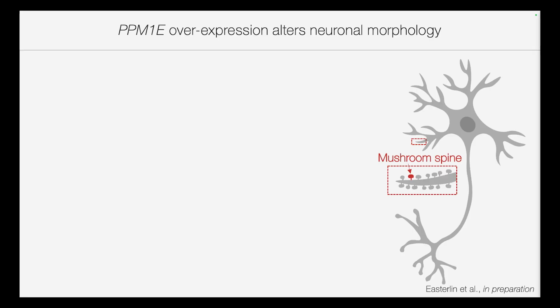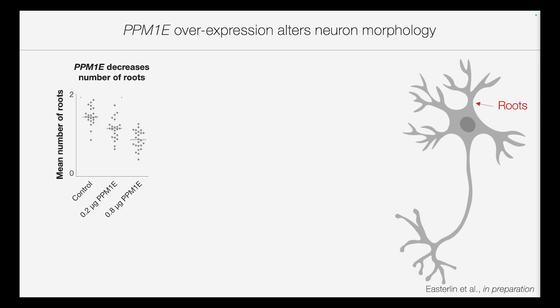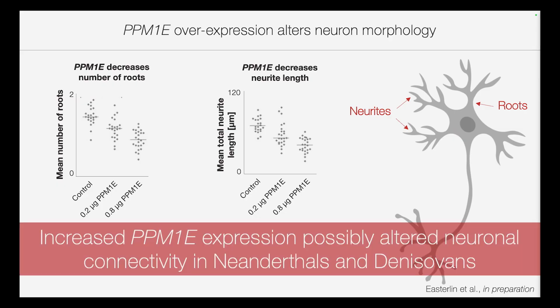The question is: what is the phenotypic effect of this variant? We focused on neurons because PPM1E is known to control neuronal structure, and specifically on a structure called mushroom spines — small protrusions from neurons that form very mature, stable synapses important in long-term memory. When we overexpress PPM1E, we see a significant decrease in the number of mushroom spines, a significant reduction in the number of roots, and in the length of neurites. Together this suggests that the increased PPM1E expression in archaic humans possibly altered neuronal connectivity in Neanderthals and Denisovans.